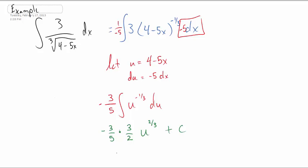And so what do we have when we clean it all up? We have negative 9 tenths. Let's re-substitute for u to the 2 thirds plus c. And how do we check? We take the derivative of this. And there we go. We are done.